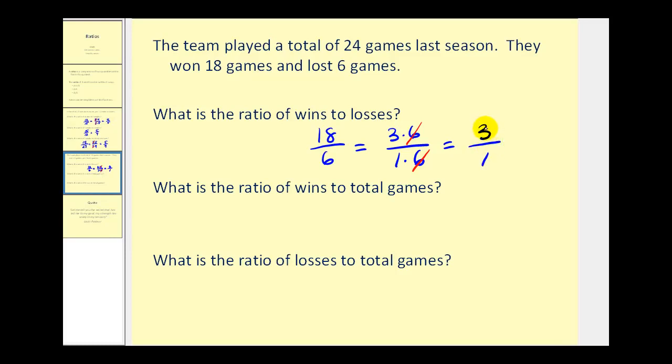It is important that we leave this as a ratio of 3 to 1 and not just write 3, because 3 by itself would not be a ratio comparing wins to losses. Even though this quotient is equal to 3, a ratio must compare two numbers.